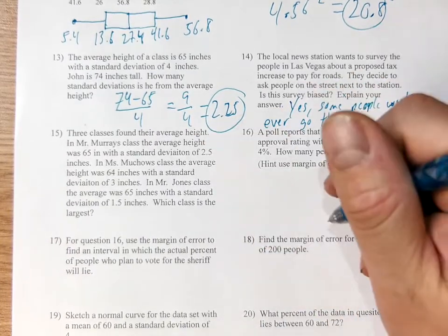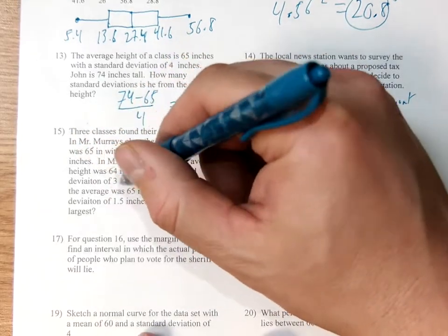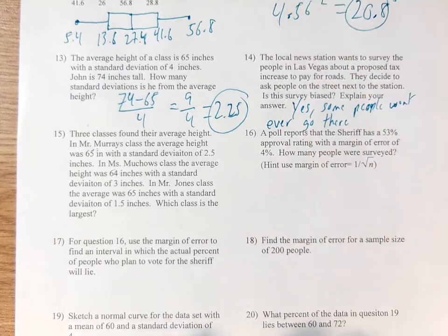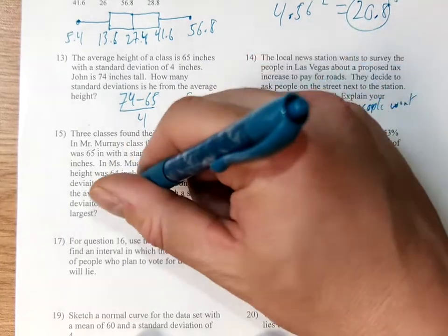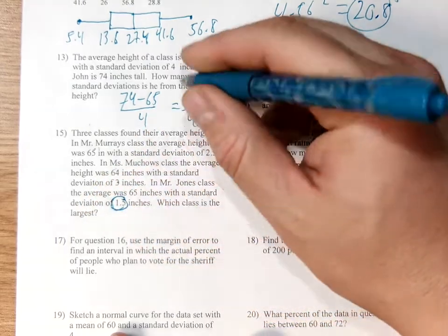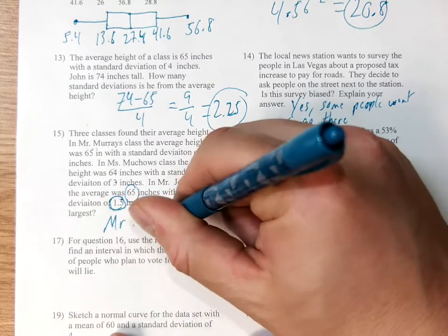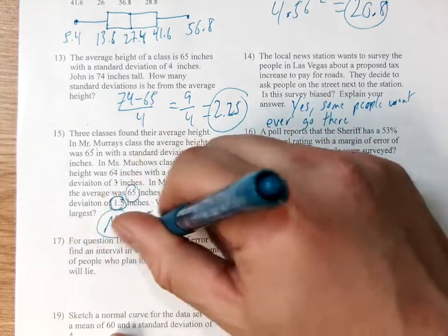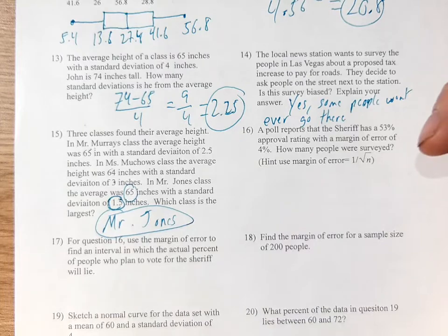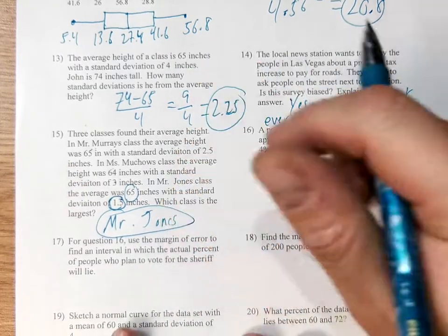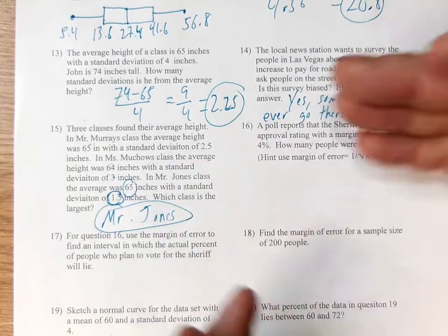So here I've got three classes. The average heights are slightly different, but two of them are the same. The standard deviations are all different. Which class is the largest? The smaller the deviation, the larger the sample size, as we talked about during the notes. So here we've got a 3, a 2.5, and a 1.5. This is the largest class. So Mr. Jones has the largest class here because his standard deviation is the smallest, or maybe he has the most people that were surveyed.